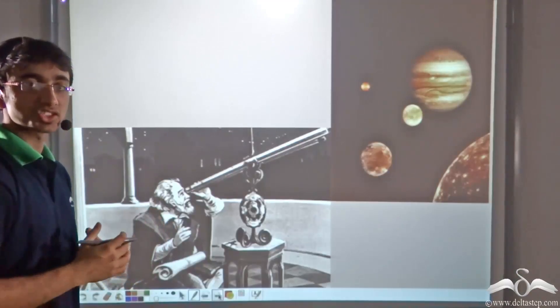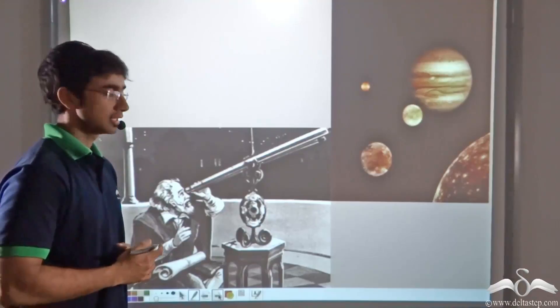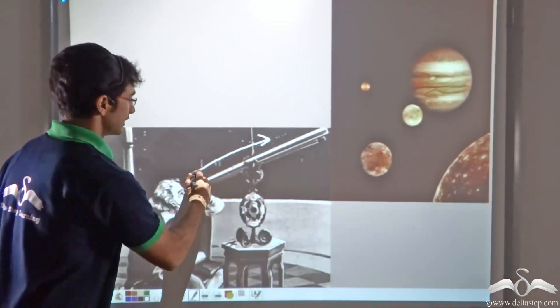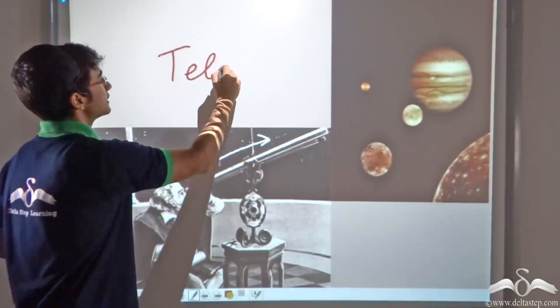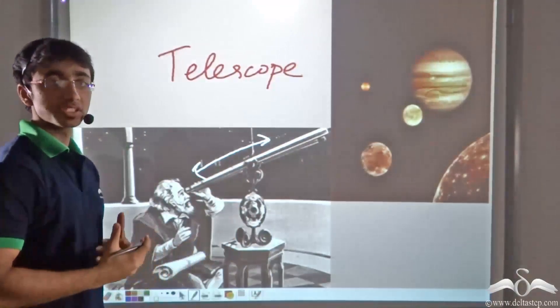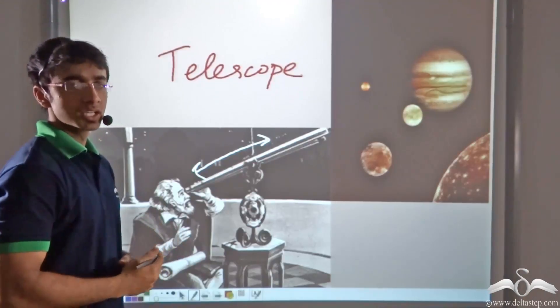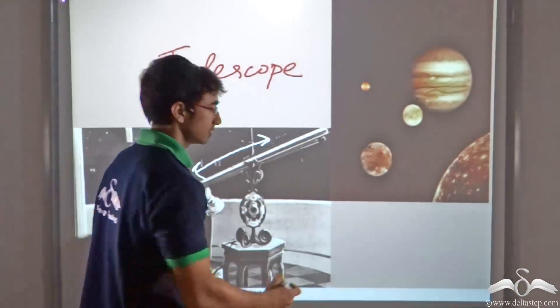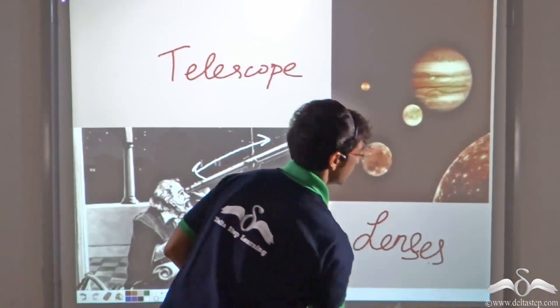Now Galileo Galilei was an astronomer who lived long back in the 15th-16th century. This object that he is using is known as a telescope. With the help of the telescope, Galileo was able to observe planets that were very far away from earth and study them. Do you know what a telescope uses? The answer again is lenses.